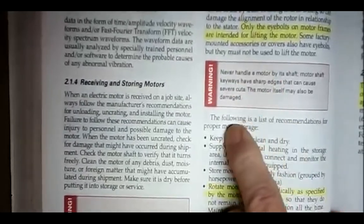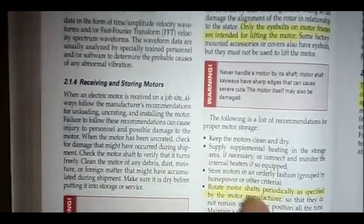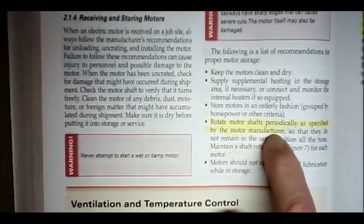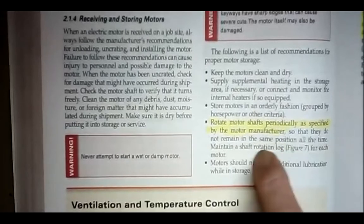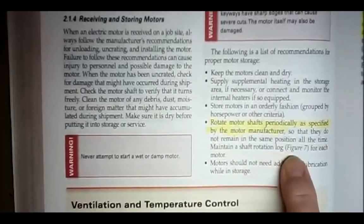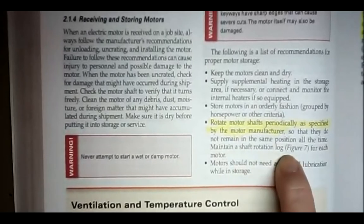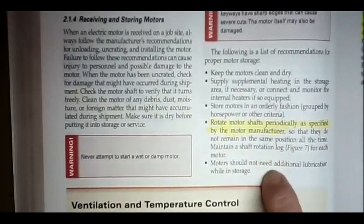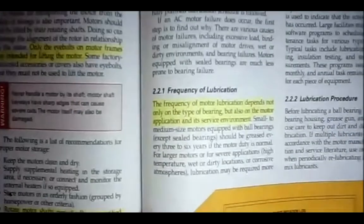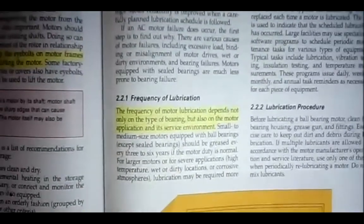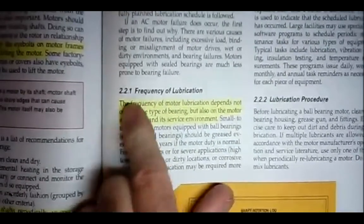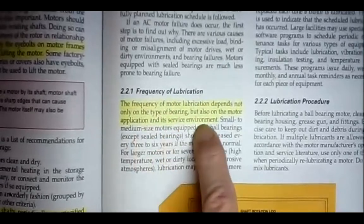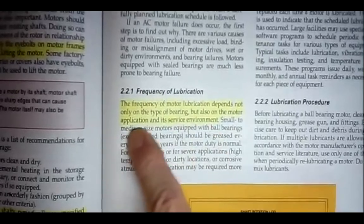This is if the motor is going to be stored for a long time. The following is a list of recommendations for proper motor storage. If you're going to store that motor for a long period of time, rotate the motor shaft periodically as specified by the motor manufacturer so that they do not remain in the same position all the time. At least once a week, you should go into the warehouse and rotate the armatures of those motors, especially if they're oil lubricated. It gets the oil into the bearings. It makes sure that they don't have any surface rust building up. Make sure that they can break free. Frequency of lubrication. The frequency of motor lubrication depends not only on the type of bearings, but also on the motor application and its service environment. Again, what is it doing and where is it doing it?